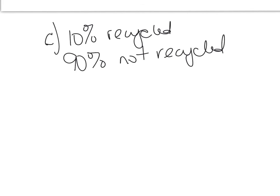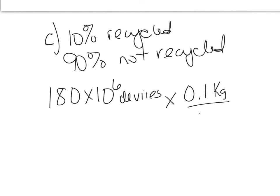It's asking for the mass of ones that were not recycled. So we're going to take our original 180 times 10 to the 6, that's 180 million, and you can write the word million instead, you can do that. Devices. And the weight of them is 0.1 kilogram per device. So now our devices cancel. Let's go ahead and multiply 0.1 times 180 times 10 to the 6. All you need to do is move your decimal back one place and you get 18 times 10 to the 6 kilograms.